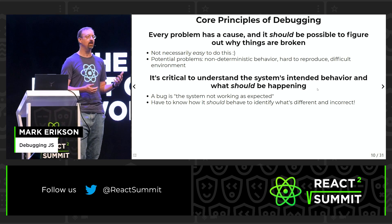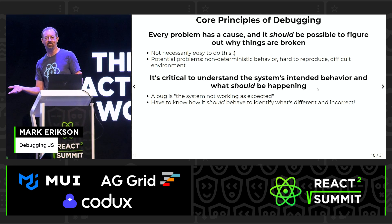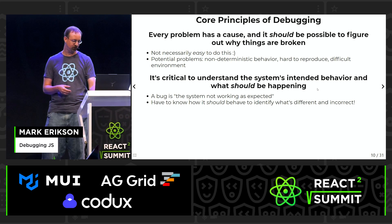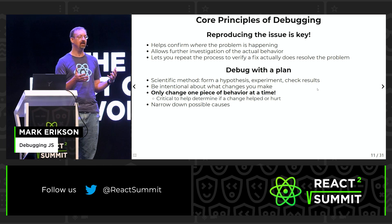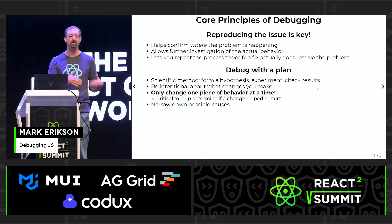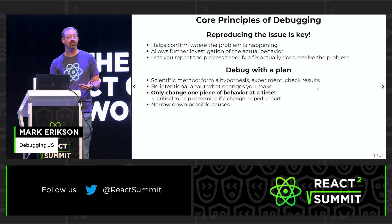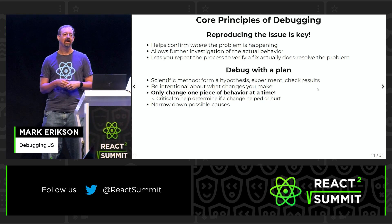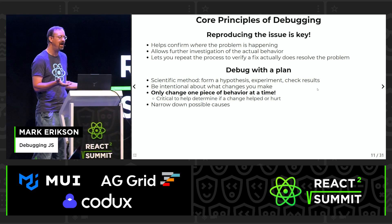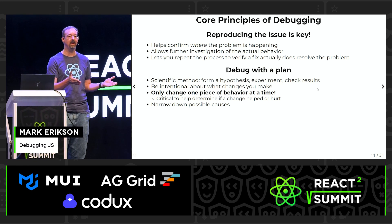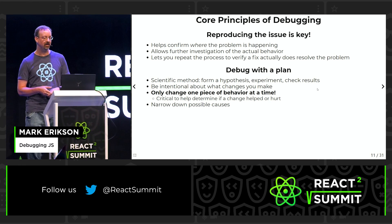It's very important to understand what the system is supposed to be doing. If a bug is something that is wrong with the system, you have to know what it was supposed to do in the first place to see that behavior is incorrect. Another principle is that reproducing an issue is absolutely key. You need to be able to figure out what area of the code is broken, which often requires a trial and error process of making this thing crash over and over. Once you think you have a fix, you need to verify it actually works. You also need to debug with a plan — the scientific method. Don't just change random variables. Be very careful and intentional, try one thing at a time, and try to narrow down where and why something is going wrong.